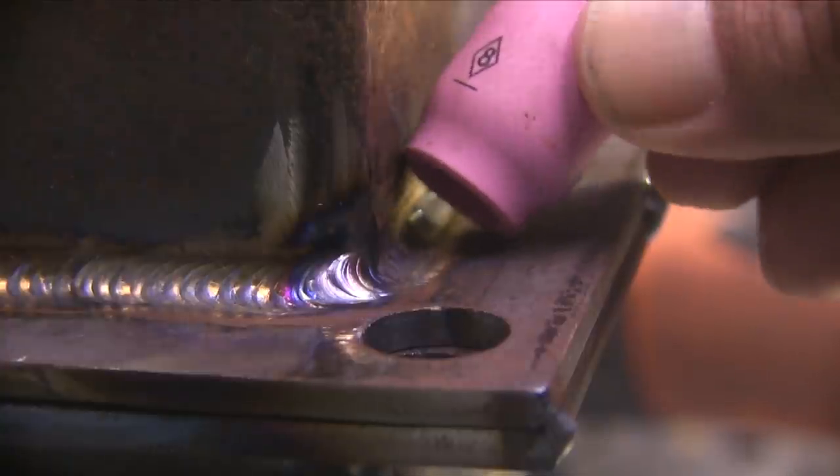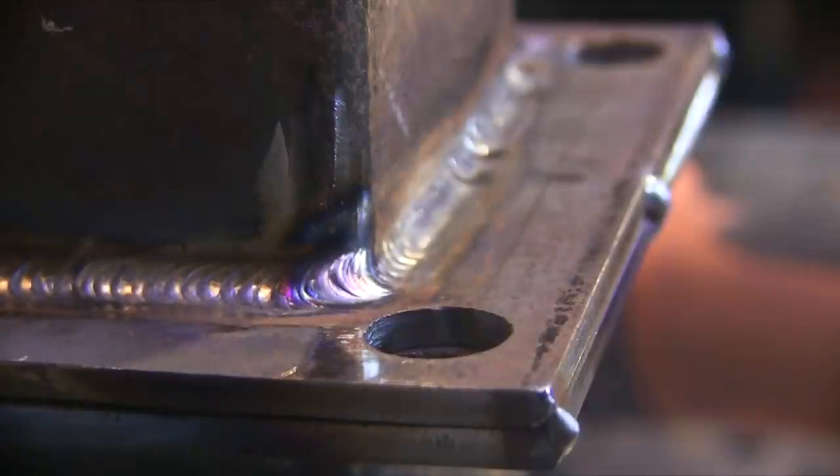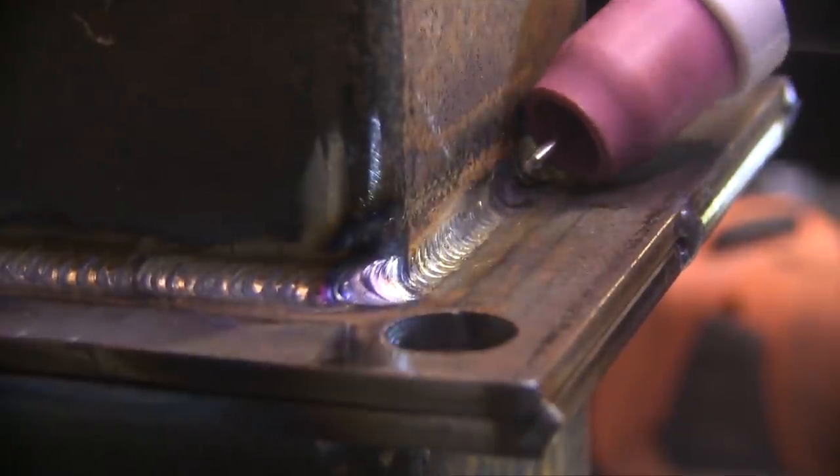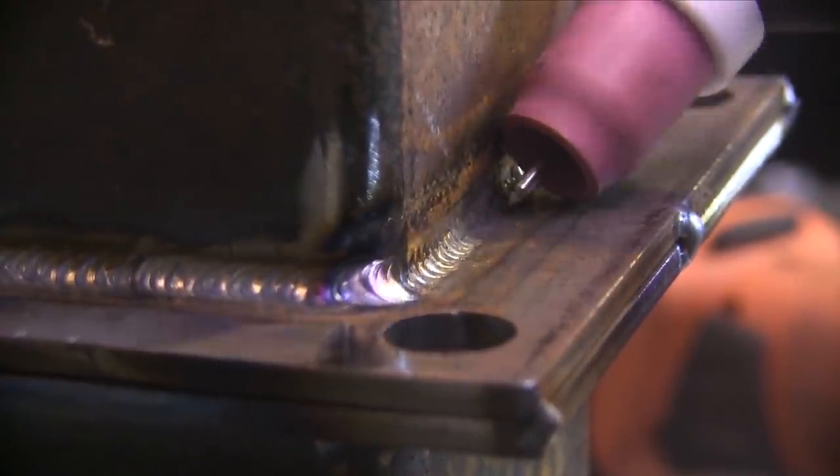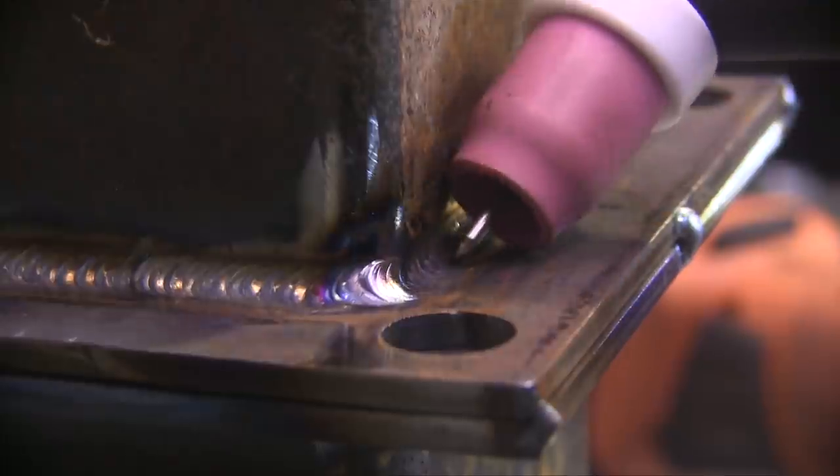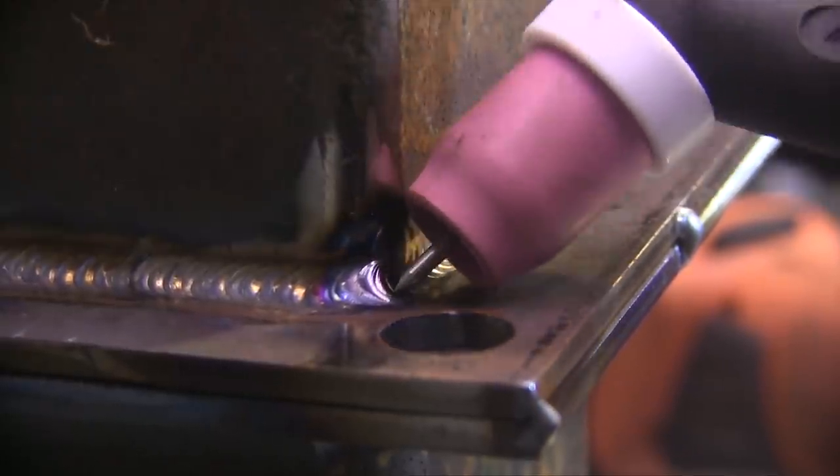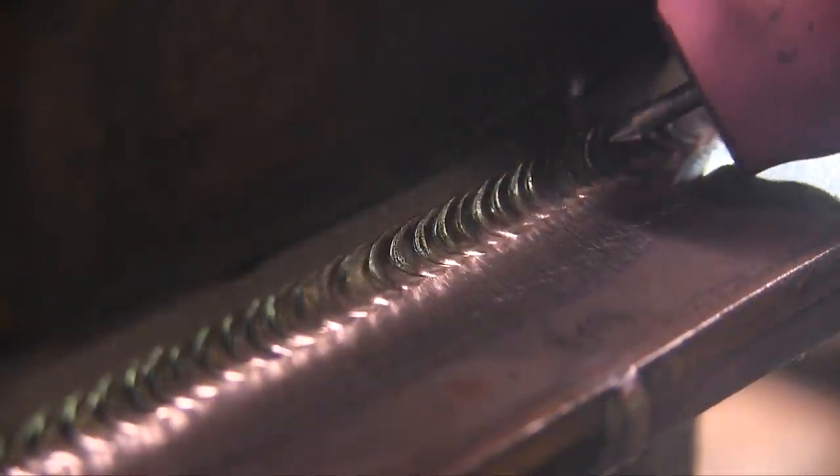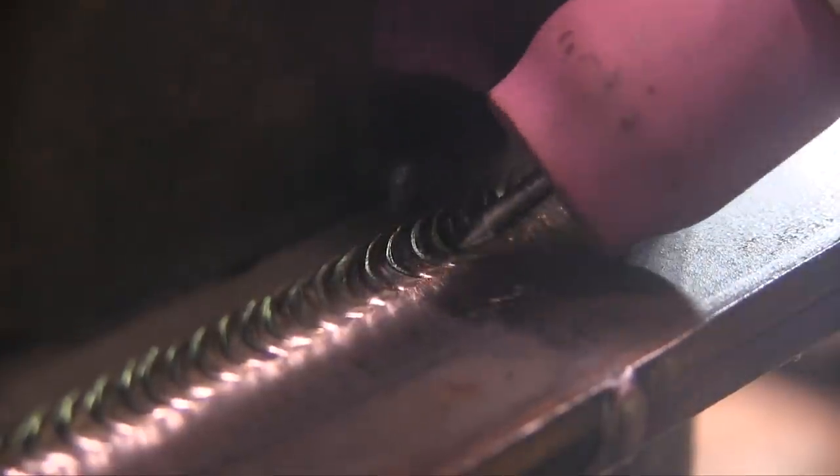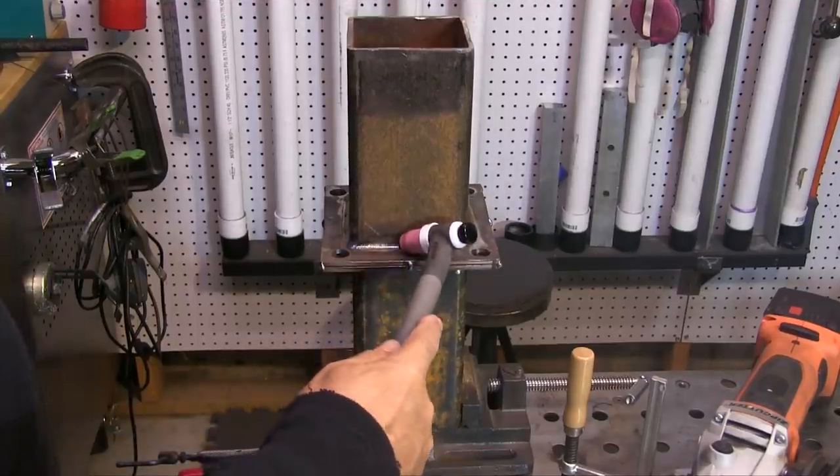This is a number eight gas lens cup and I'm going to be using it with a stubby gas lens kit on an air-cooled 17 torch, one that came with the Lincoln Square Wave TIG 200. The stick out is important too. A rule of thumb for stick out on walking the cup would be usually it's not much more than the inside diameter of the cup. So this is an eight, it's not going to be more than half an inch, probably closer to 7/16. And you can see as I'm wiggling it there, I got plenty of space under the cup as I wiggle it along for the cup to rest on the sidewalls instead of on the weld.